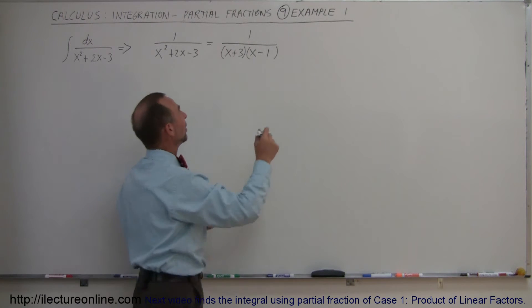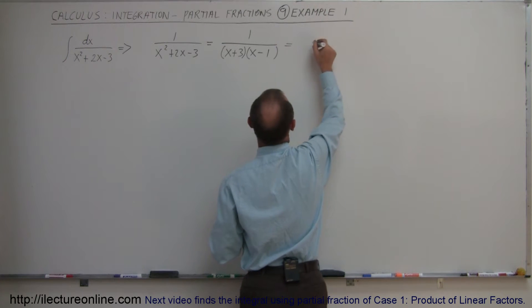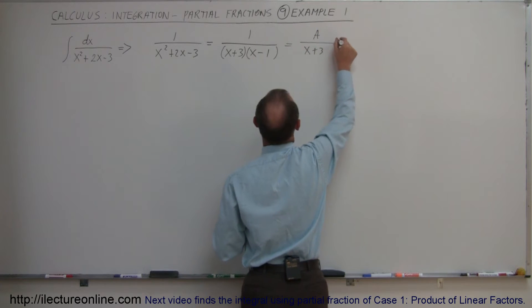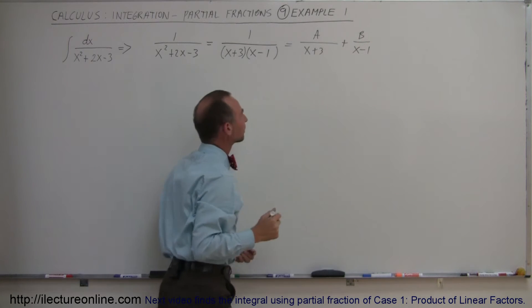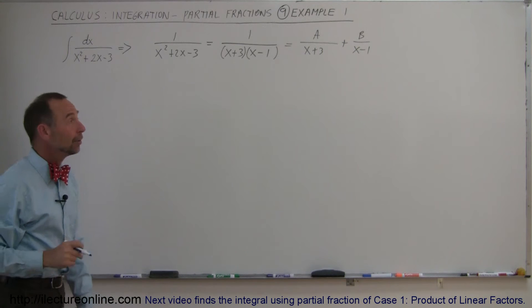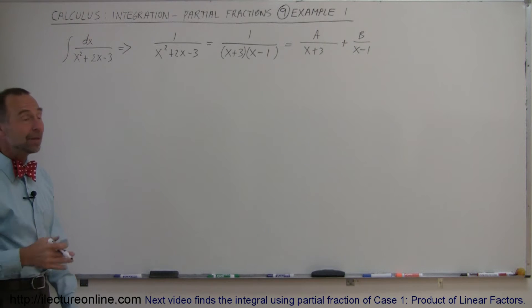Now we can write it as a sum of partial fractions, so we can write this as A over x plus 3 plus B over x minus 1. That's a terrible looking B, there we go. Now the only thing we have to do is find out what A and B are equal to.